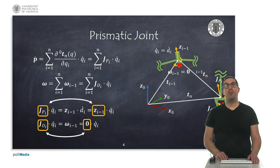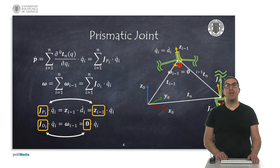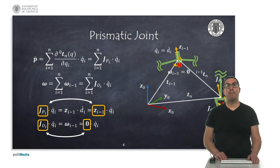We will distinguish between prismatic and revolute joints, since their contribution to the velocities is different. In the figure on the right, we can see a representative example of a prismatic joint moving with a linear velocity in the direction of the axis z_{i-1}, without angular velocity. In this case, we can see that the velocity component observed in the end effector is actually the magnitude of the joint velocity, that is q_i-dot, in the direction of the z_{i-1} axis. The angular velocity component is always zero for this type of joints.